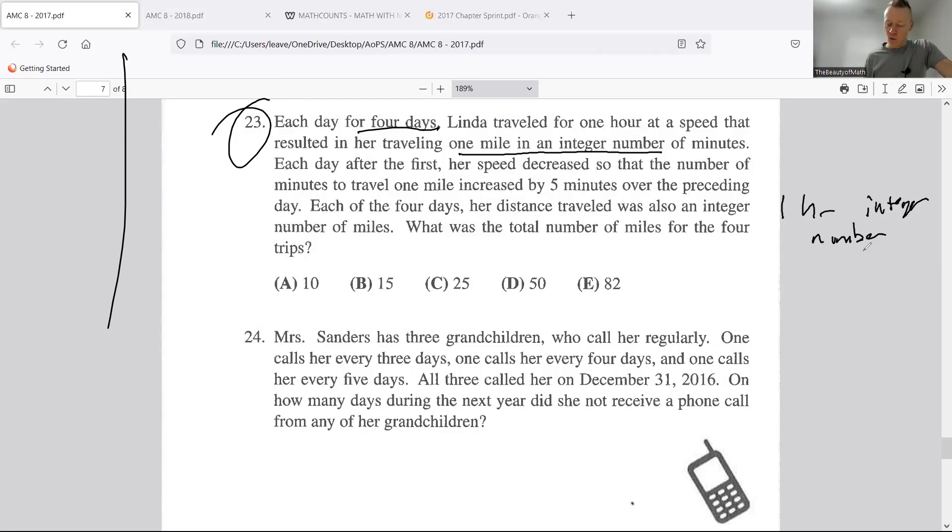Each day after the first, her speed decreased so that the number of minutes to travel one mile increased by five minutes over the preceding day. So let's say she did one mile in one minute, then the next time it would be one mile in six minutes.